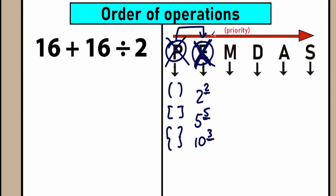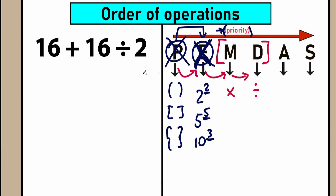We go from left to right step by step, because on the left side we have elements with higher priority. The next letter is M, which stands for multiplication. A lot of students may think multiplication is first and division second because D comes after M in PEMDAS. But multiplication and division are one common group.